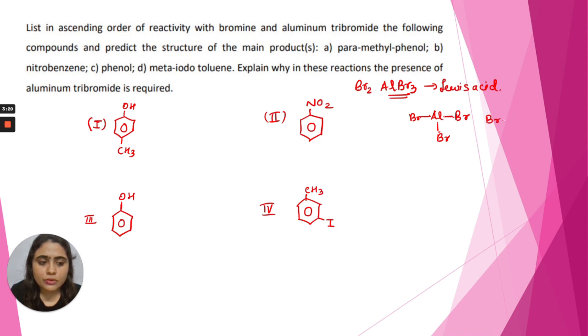This aluminum bromide polarizes the non-polar bromine molecule. There is an electron distortion - there will be partial negative charge, partial positive charge.